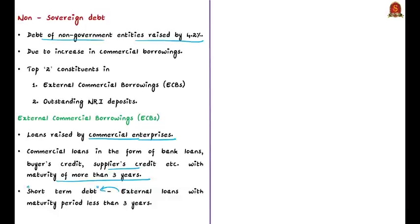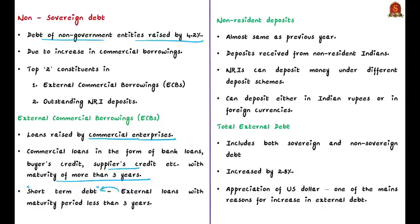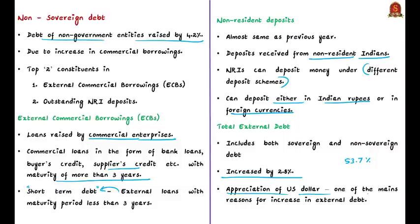According to the news, non-resident deposits — the second largest constituent under non-sovereign debt — didn't change much. The deposits received from non-resident Indians come under this head. NRIs can deposit money under different deposit schemes, either in Indian rupees or in foreign currencies. The total external debts, including both sovereign and non-sovereign debt, increased by 2.8% by the end of March 2020. India's foreign debt is primarily denominated in US dollars, with a share of 53.7%, so appreciation of the US dollar in March 2020 is also a major reason for the increase in foreign debt.